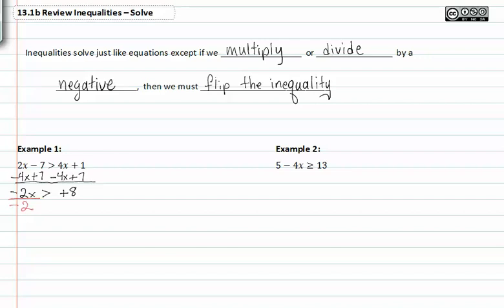We divide by negative two to isolate x, which means we're going to have to flip the inequality over. This gives us x is less than negative four.